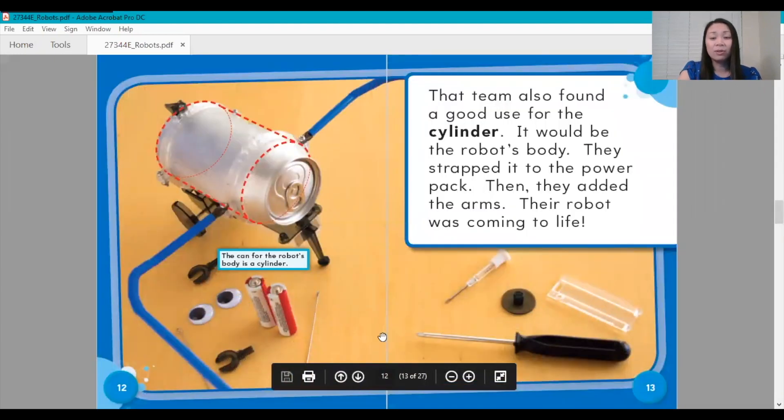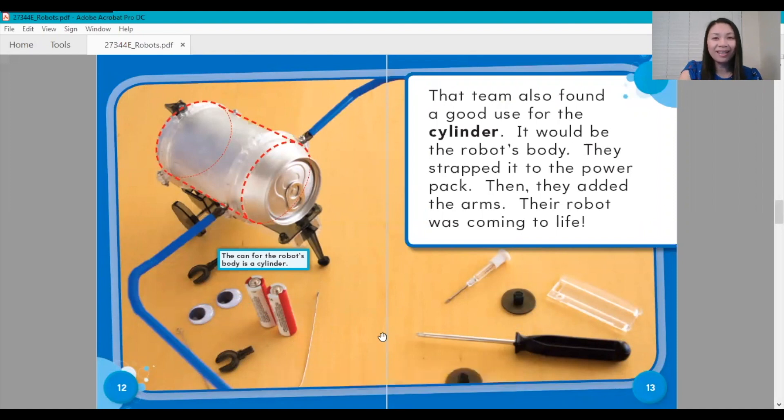That team also found a good use for the cylinder. It would be the robot's body. They strapped it to the power pack. Then they added the arms. The robot was coming to life. The can for the robot's body is a cylinder.